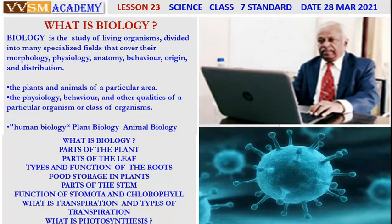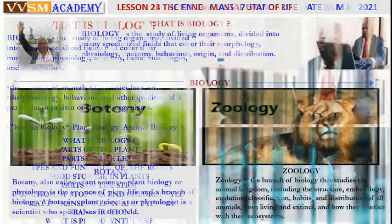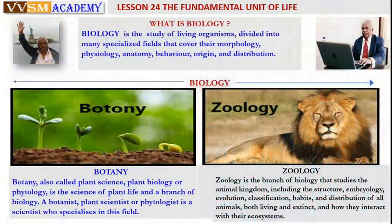We should know the parts of the plant, parts of the leaf, types and functions of the roots, shoot system, and root system. Now you know botany — the main branches of biology are botany and zoology. Botany, also called plant science, plant biology, or phytology, is the science of plant life and a branch of biology.